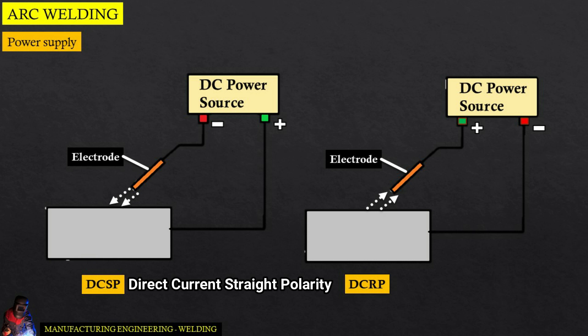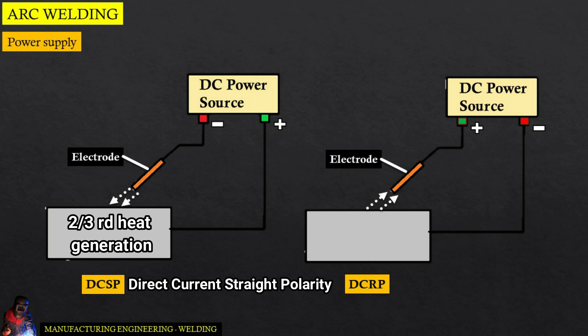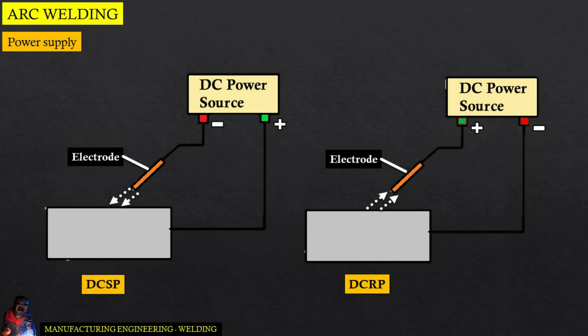DC SP means direct current straight polarity, in which the workpiece is connected to positive and the electrode is connected to negative. Two-thirds of the heat is generated on the positive side. The depth of bead penetration is deep and the width of the bead pass is narrow in the case of DC SP.